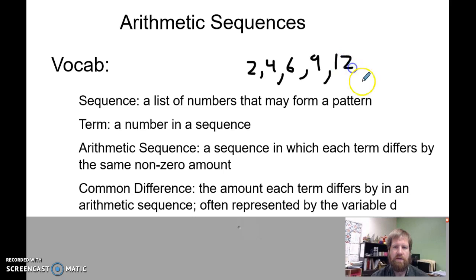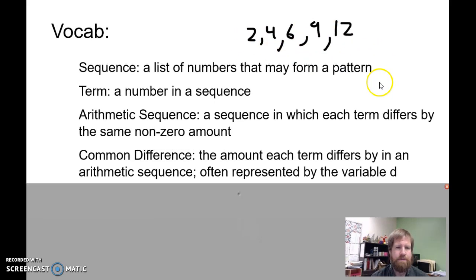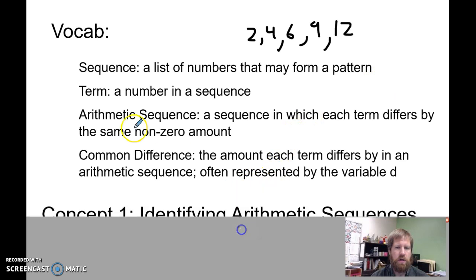Nine, twelve—that's a sequence. There's not really any pattern to this sequence, but it is a sequence. A term is any number in the sequence, so this two is a term, four is a term, six is a term. Each of these are terms, and we'll usually think of them in order, so this would be term one, term two, term three. This would be the next term, next term, the previous term.